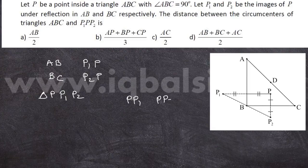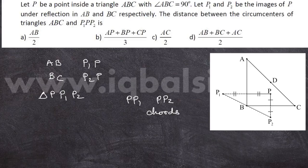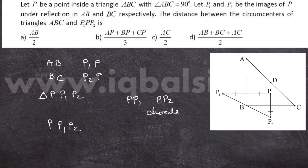PP1 and PP2 are the two chords, and AB and BC are the perpendicular bisectors of these two chords. So the point of intersection of the perpendicular bisectors of these two chords will be the center of the circumcircle. Therefore, the circumcenter of triangle PP1P2 is the point of intersection of lines AB and BC, which is nothing but the point B.